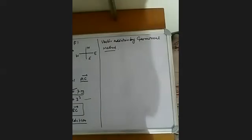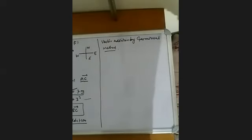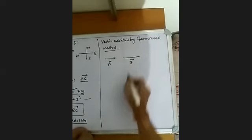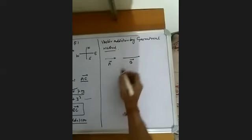So how to add vectors geometrically — the rules are the triangle law of vectors. According to this rule, the vectors which are added are arranged in such a way that suppose we have a vector A and a vector B. How do we add these two?